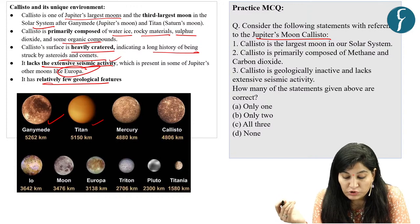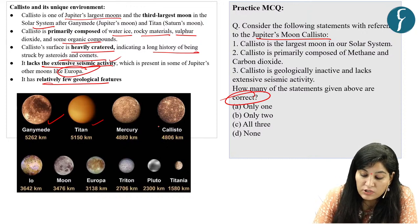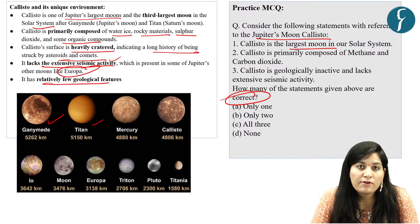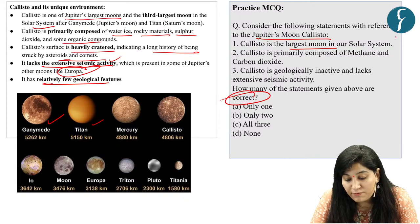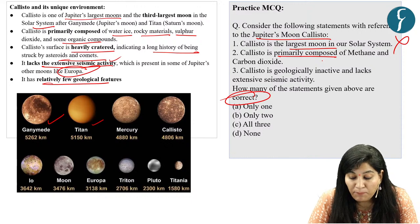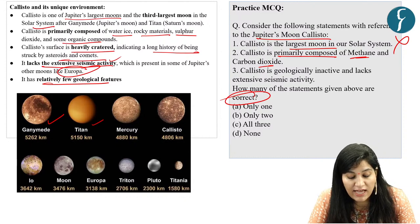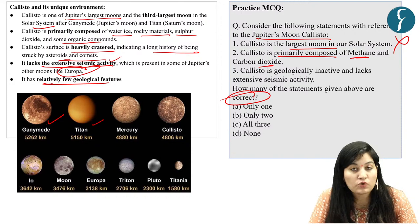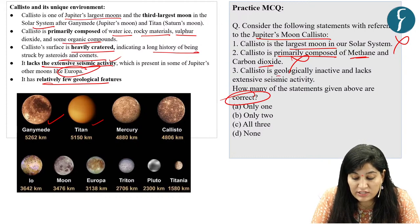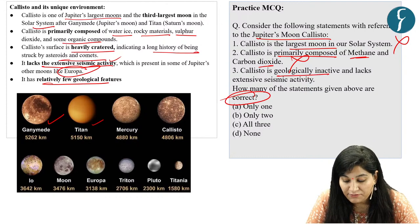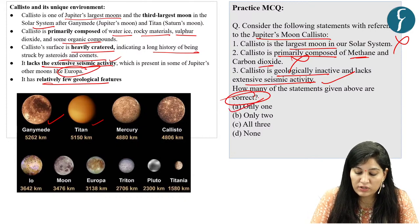Let's solve our practice question. Statement 1: Callisto is the largest moon in our solar system — incorrect. First is Ganymede, then Titan; Callisto is third. Statement 2: Callisto is primarily composed of methane and carbon dioxide — incorrect. It is composed of water, ice, sulfur dioxide, and rocky material with potential to support life. Statement 3: Callisto is geologically inactive and lacks extensive seismic activity — this statement is correct. So our answer is option A — only one correct statement.